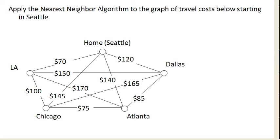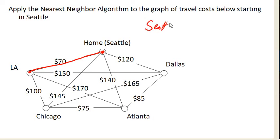We looked at some flight costs here and let's find a pretty good circuit using the nearest neighbor algorithm. Starting here in Seattle, we ask: what is my cheapest option? We've got 70, 145, 140, 120 — so 70 is our best option. So far, we've got Seattle to LA.